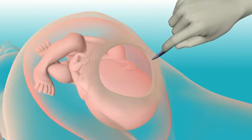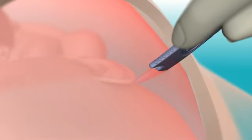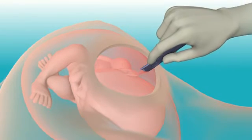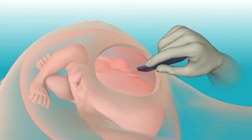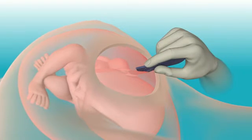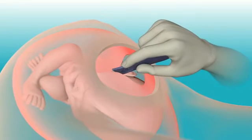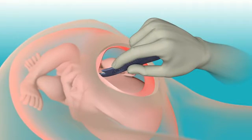If the uterine wall is thin, the tip will easily puncture through it. Once the tip punctures the uterus, by rocking the wrist back, the tip and blade move up and away from the baby. With the device in a rocked back position, continue the incision transversely.